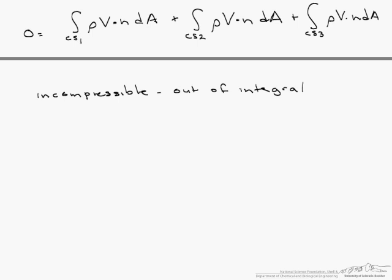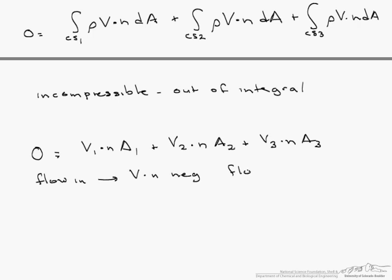So what we are left with is 0 equals v1 dot n times A1 plus v2 dot n A2 plus v3 dot n A3. So what is this v dot n? Again it is the dot product of our velocity times the unit normal coming out of the control surface. So if we have flow in, then v dot n is negative. If we have flow out, v dot n is positive.